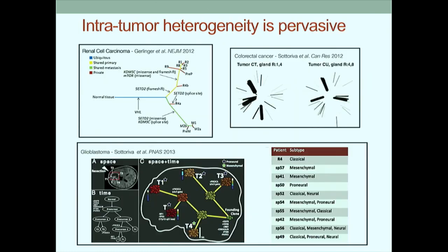As we all know, intratumor heterogeneity is pervasive. When we go in and sample from different regions of a tumor, as Nikki elegantly demonstrated, we find heterogeneity at almost every level we can imagine. For pathologists, this is nothing new - cellular heterogeneity has been appreciated for many decades. We're just getting better at quantifying it.